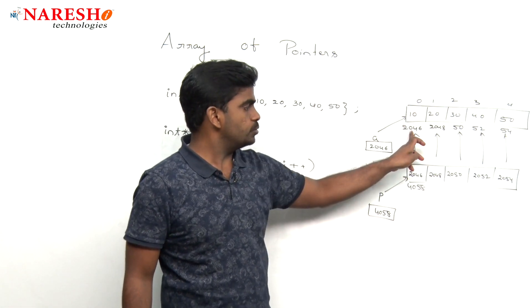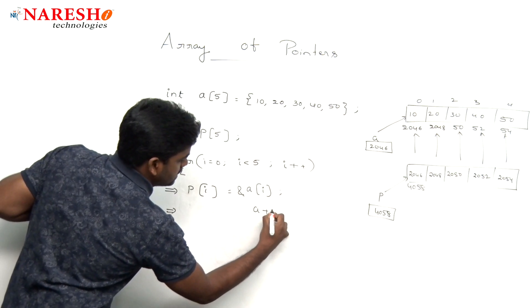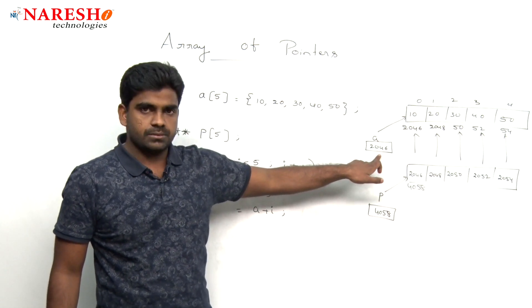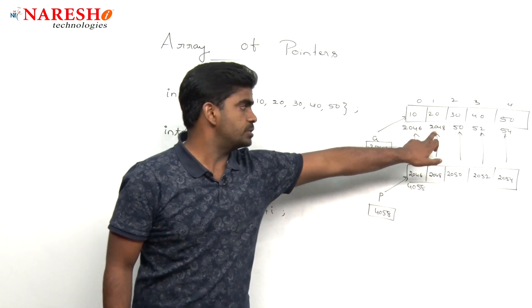So, directly 2046, 2048, 2050 means simply a plus i. a value 2046 plus 0 means what? Same 2046, plus 1 means 2048,